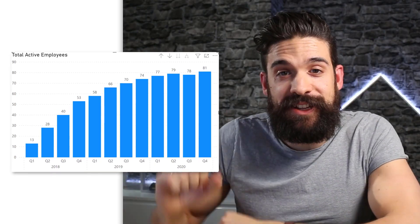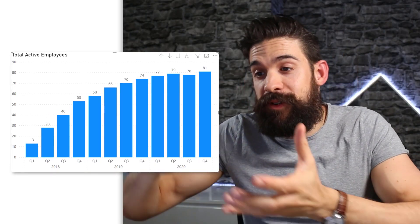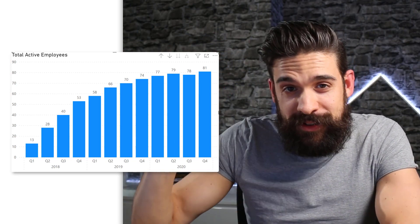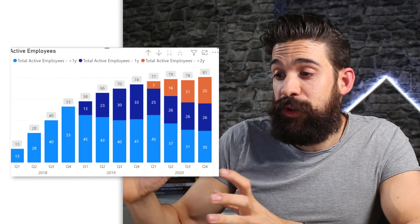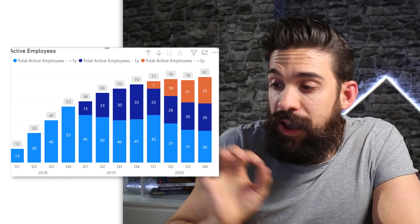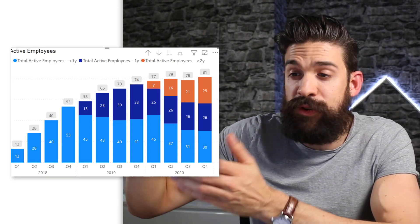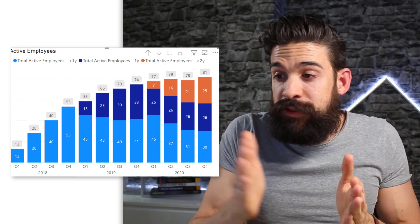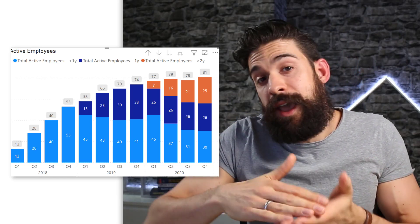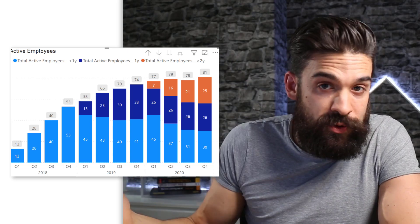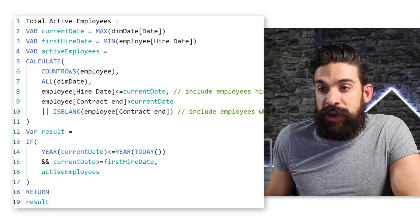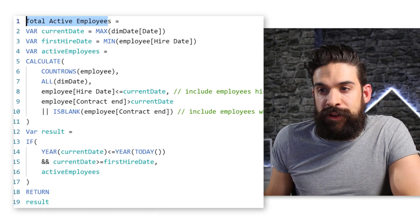This is the visualization that we built last time, showing the total number of active employees over time. And we want to take this visual and turn it into one that also shows the total number of active employees, but with a legend that breaks it down by tenure bands. So let's have a look at where we left off last time — this is the DAX calculation that we wrote for calculating the total number of active employees.